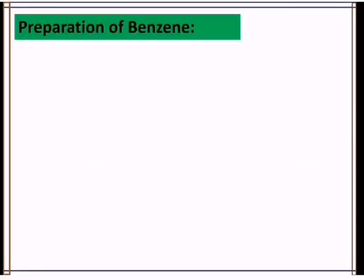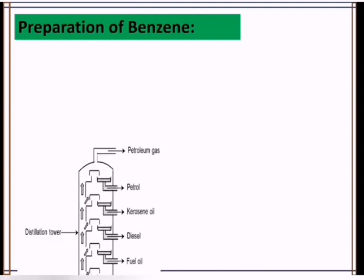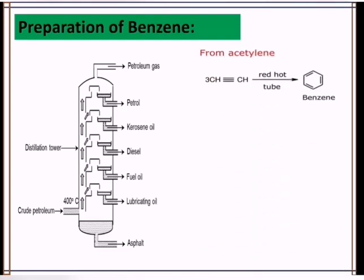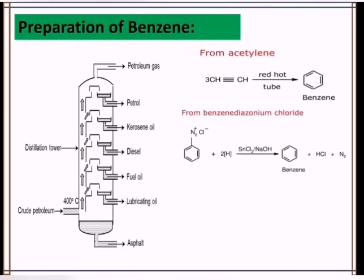Preparation of benzene. Benzene is a naturally occurring compound in crude oil. It can be obtained by fractional distillation of petroleum, specifically during the separation of the aromatic fraction. In fractional distillation, at a particular temperature, we have different fractions going off. Benzene can also be prepared from acetylene. It can also be prepared from benzene diazonium.